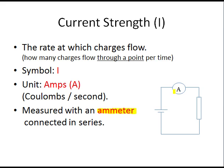Current strength is measured with an ammeter. An ammeter must always be connected in series to a circuit so that all the charge flowing through the circuit can be counted by it.